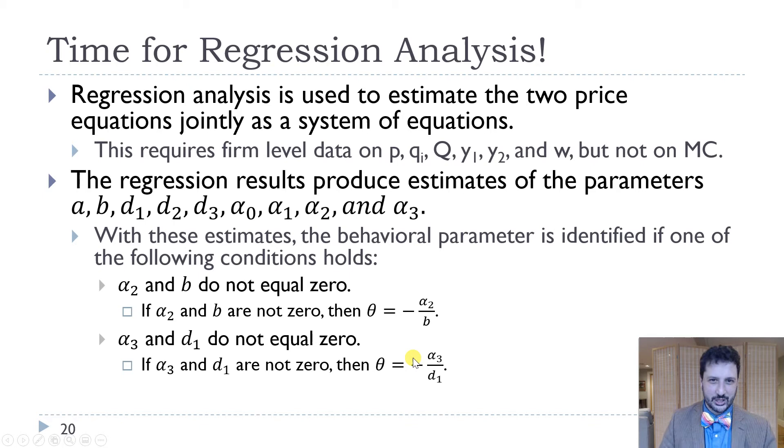How are we going to do that? We use regression analysis. We're going to estimate the two price equations jointly as a system of equations. This is the problem with any kind of equilibrium outcome such as price: it can be very difficult to find that relationship between price and quantity because really we have two different relationships. We do need firm level data. So we need firm level data as price, individual output, total output, whatever our Y1 and Y2 are, maybe consumer income and a price of a substitute good, and W where W is the price of the input costs like the wage. But we don't need marginal costs, which is good because we don't usually have it.